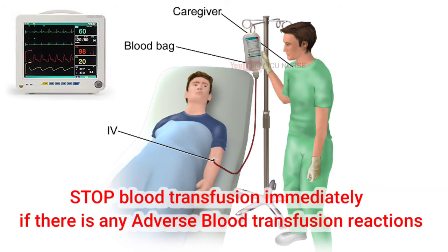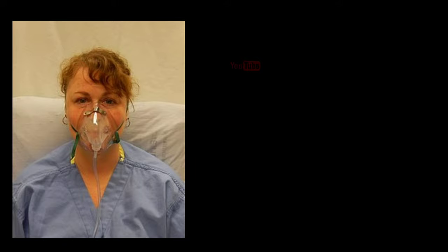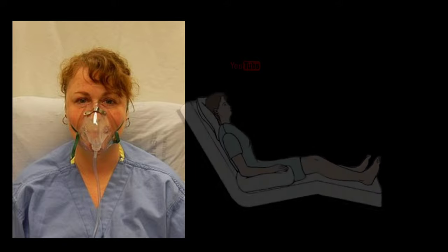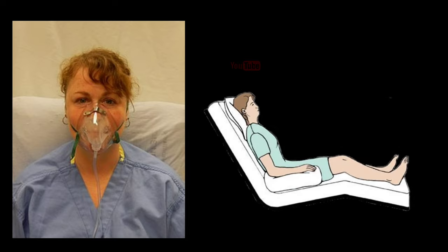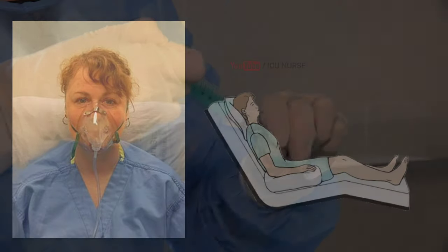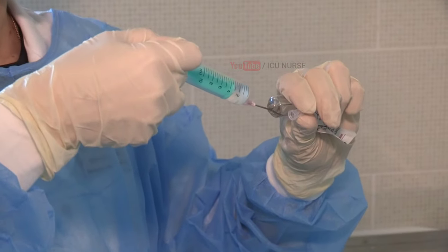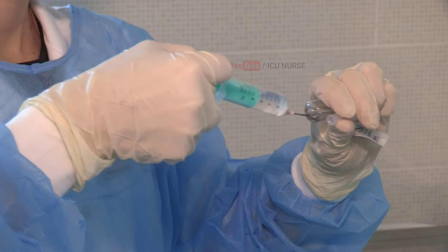Simultaneously, check and monitor the patient's vital signs. Check that the correct blood bag has been given to the correct patient. If you notice any breathlessness as a transfusion reaction, place the patient in a Fowler's position and administer oxygen. Remain with the patient and check the vitals every 5 minutes and inform the doctor. Get ready to give adrenaline, hydrocortisone, vasopressors or fluids as advised by the doctor or as per the standard operating procedure of your hospital.